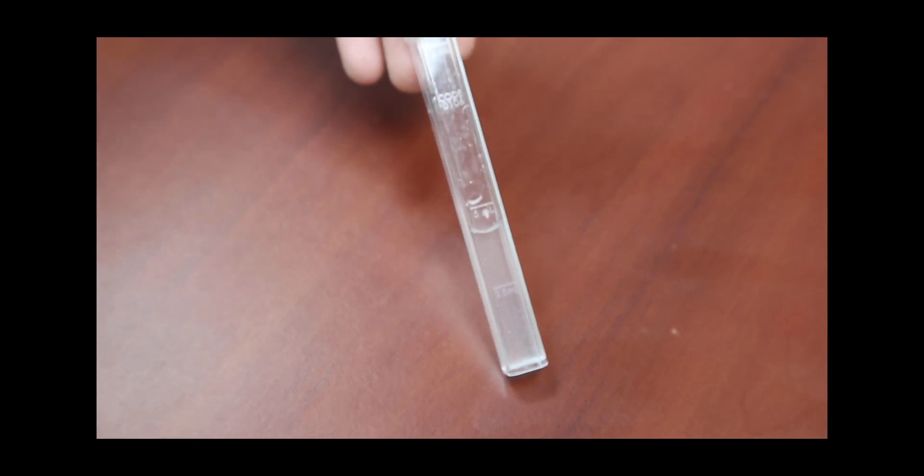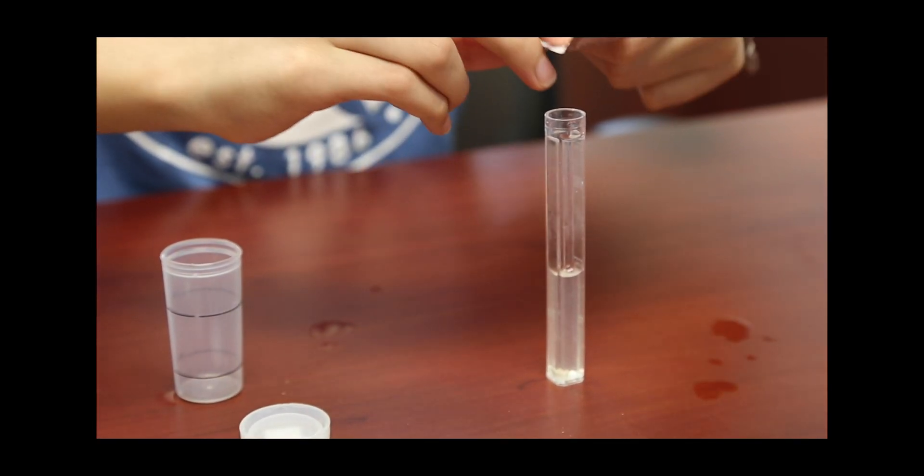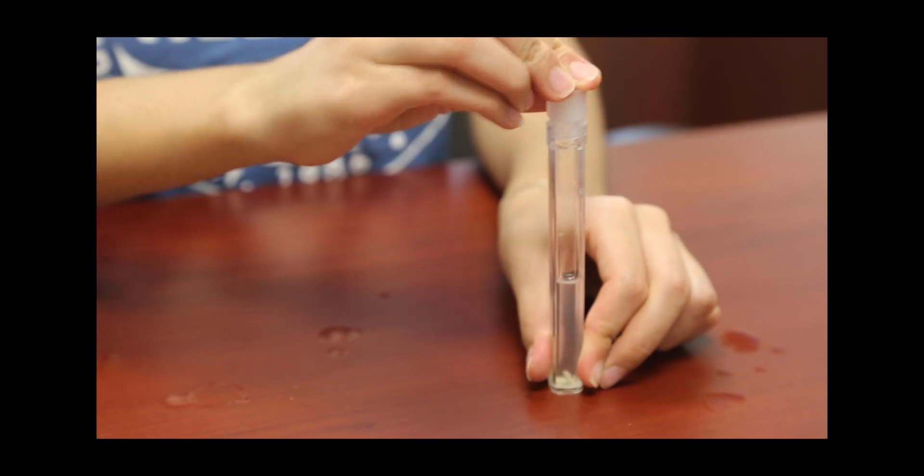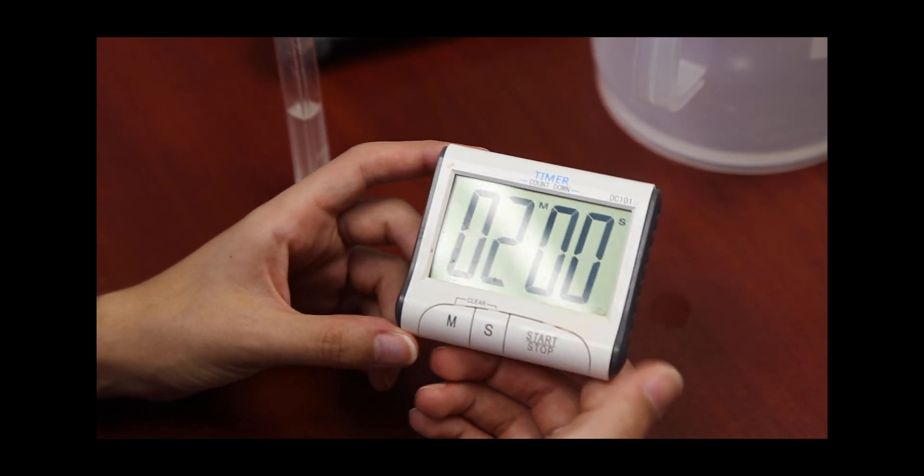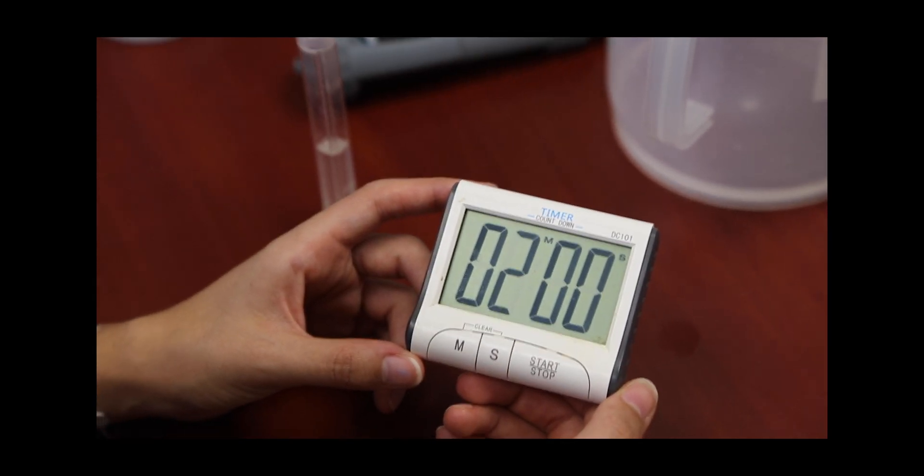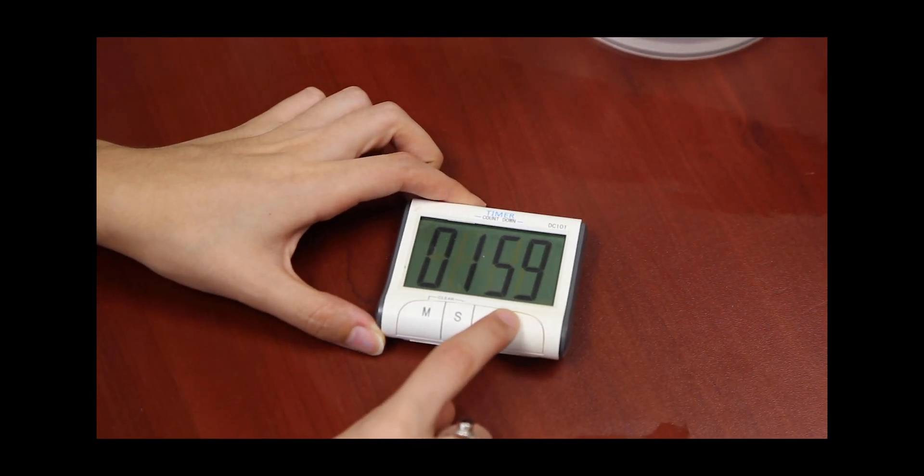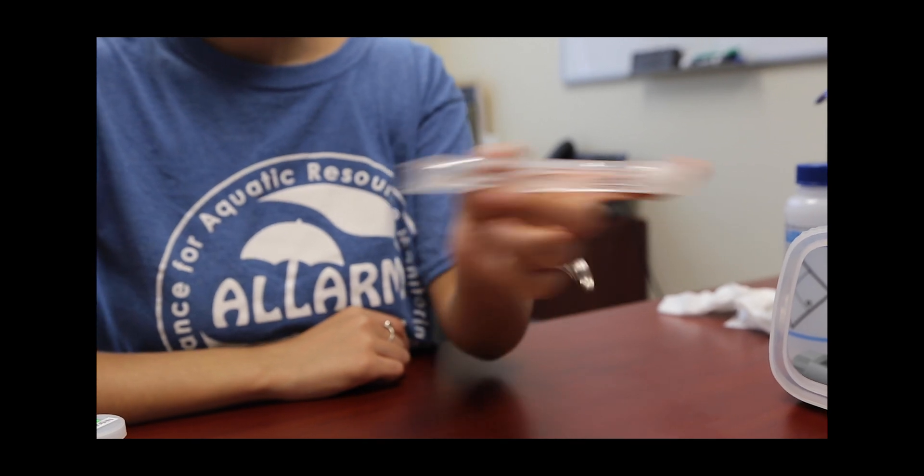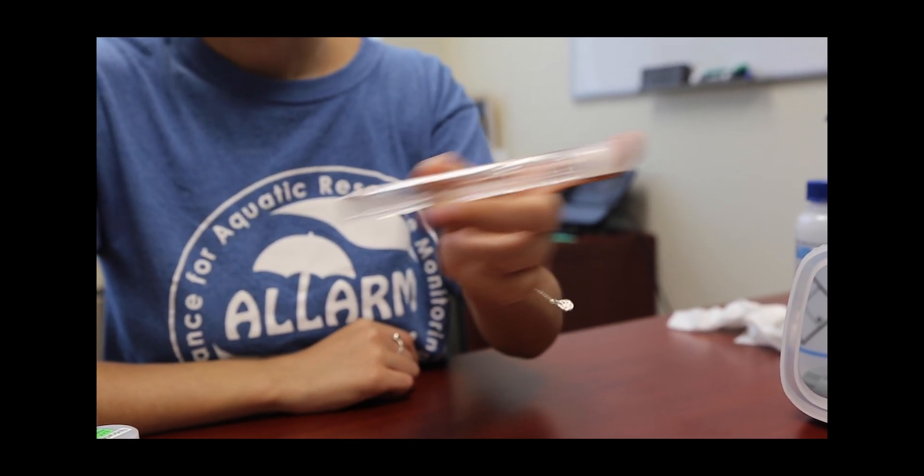Once your tablet is dissolved, add Nitrate Number 2 tablet to the test tube and cap it. Grab your timer and set the time for 2 minutes. Shake the test tube continuously to dissolve the tablet. Try to shake in a consistent manner for 2 minutes.